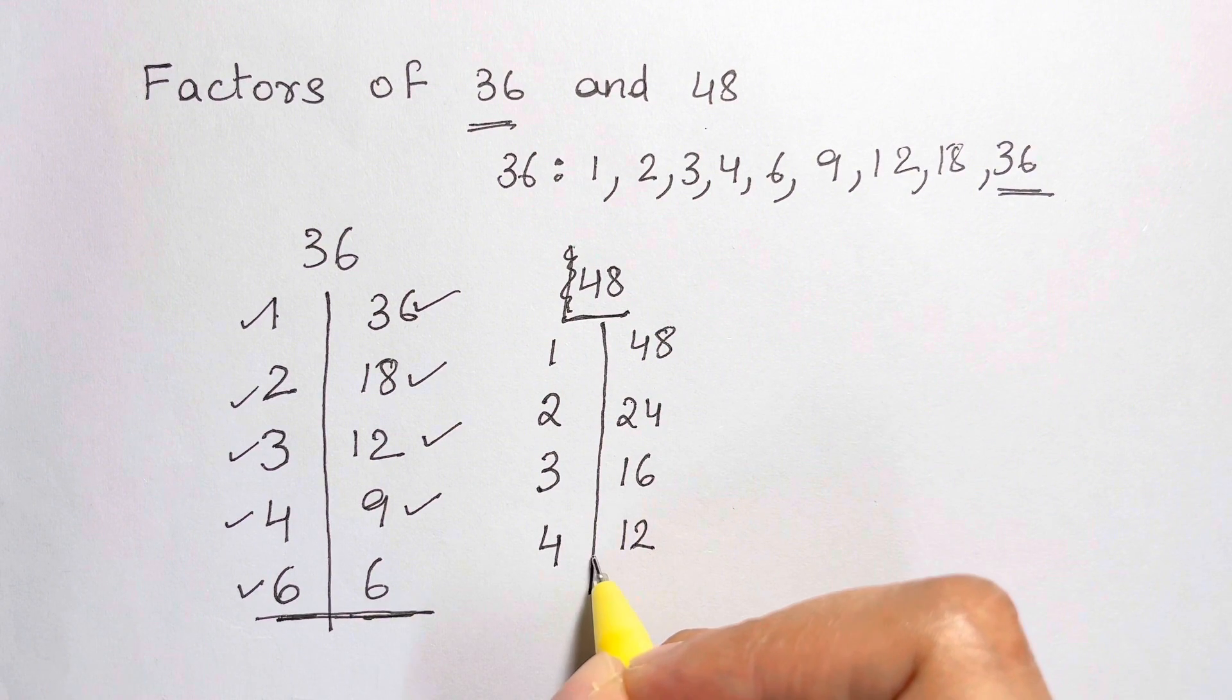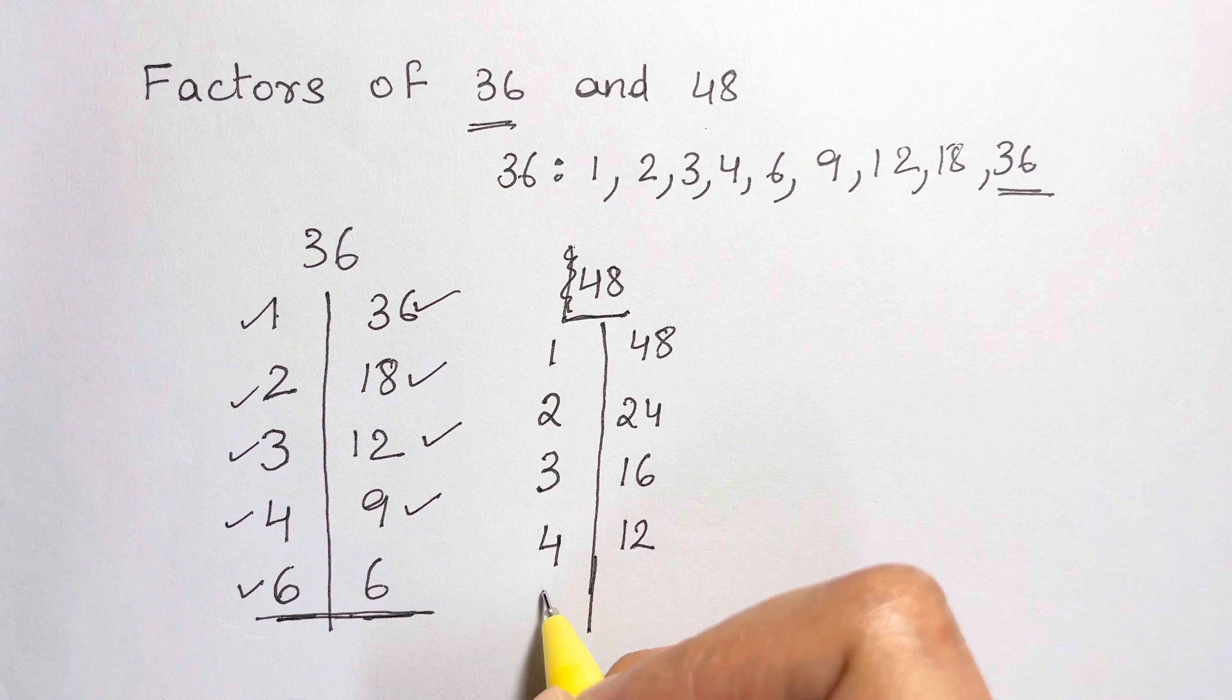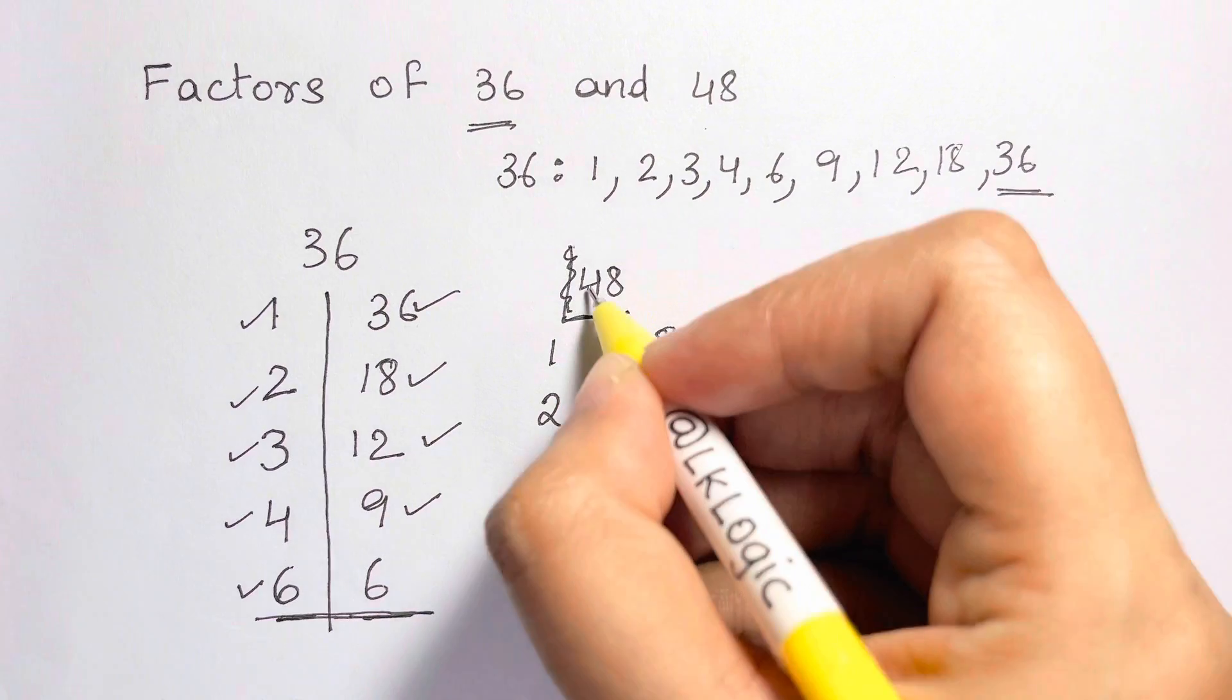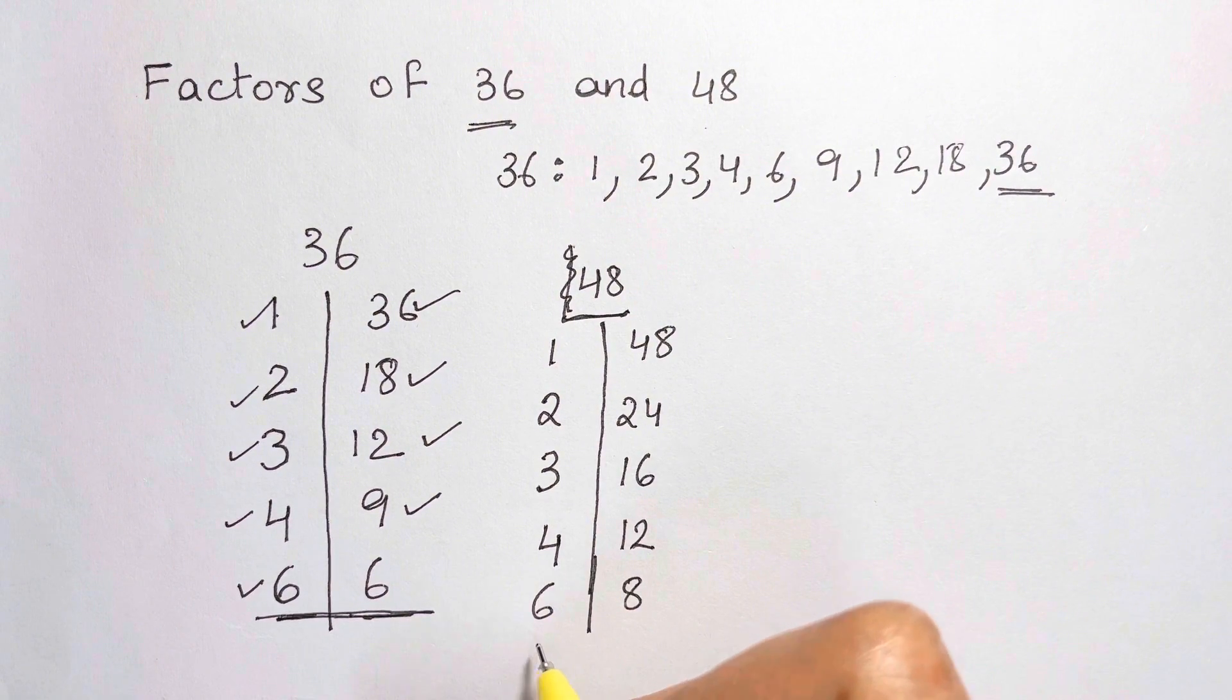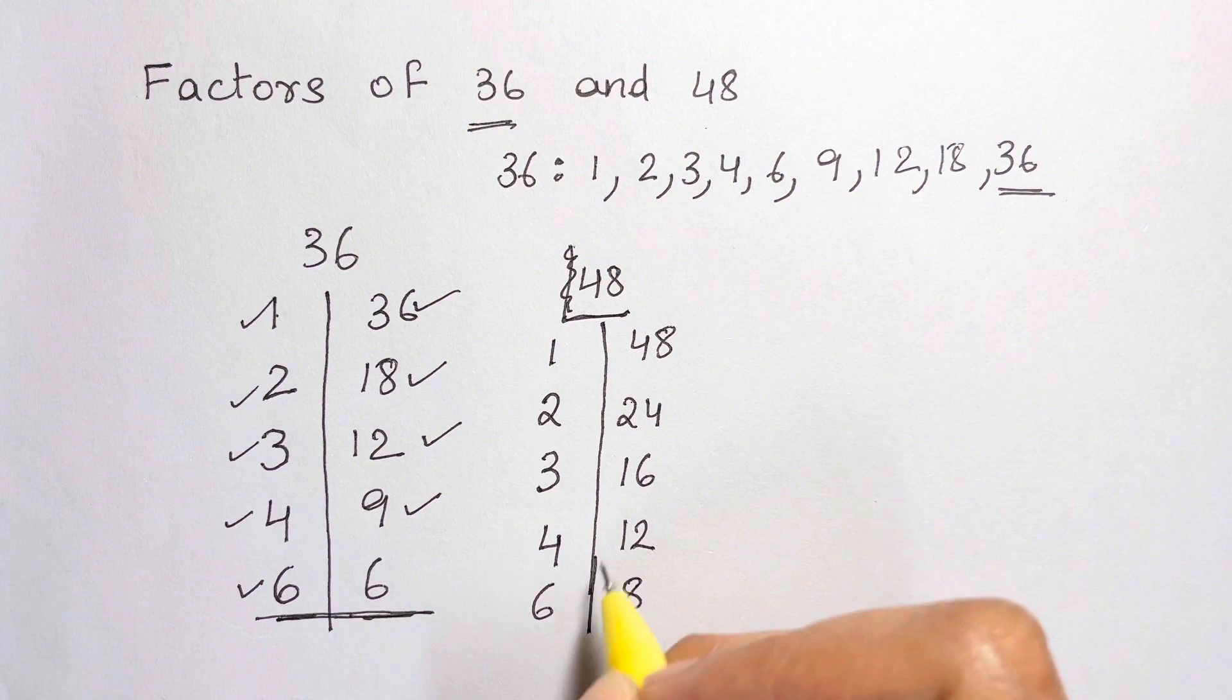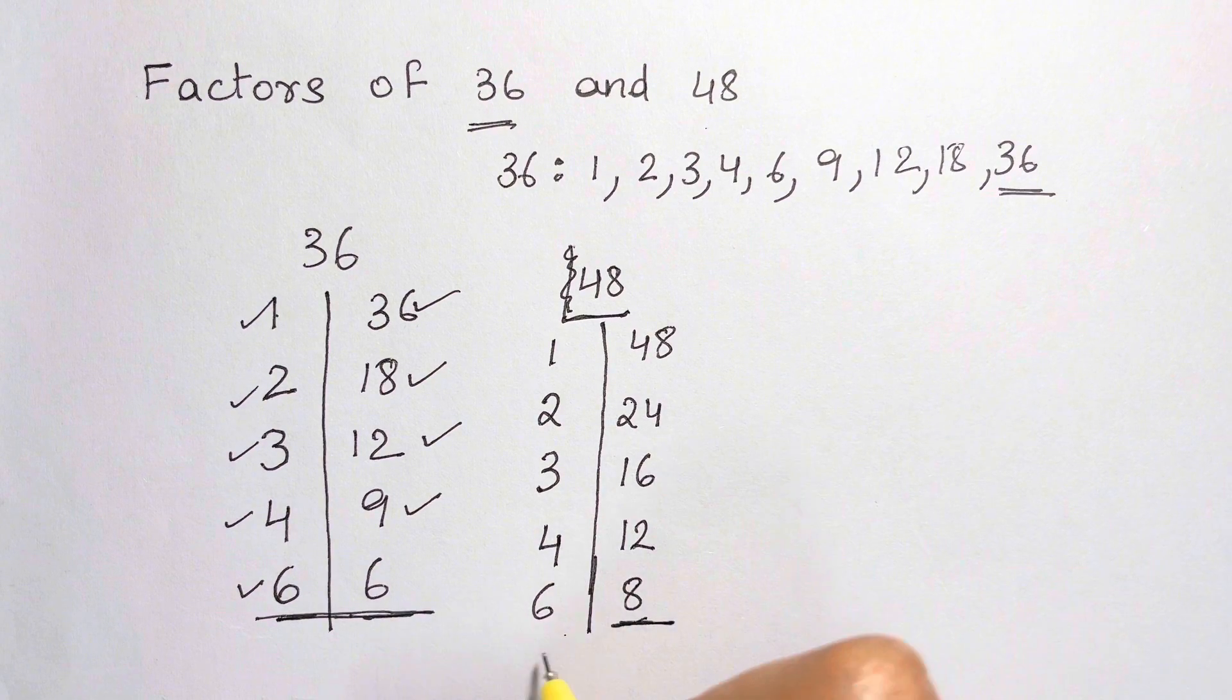Next number after that is 5. 48 is not divisible by 5. So, let's take after that, 6. 6 times 8 is 48. Or, 48 divided by 6 is 8. So, the next number after that is 7. 48 is not divisible by 7. And the next number after that is 8. And we've already got 8 on the other side. So, we stop here.